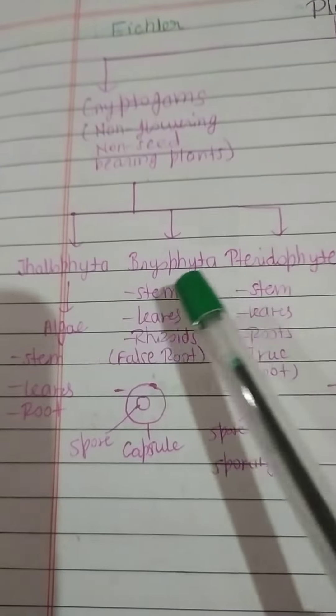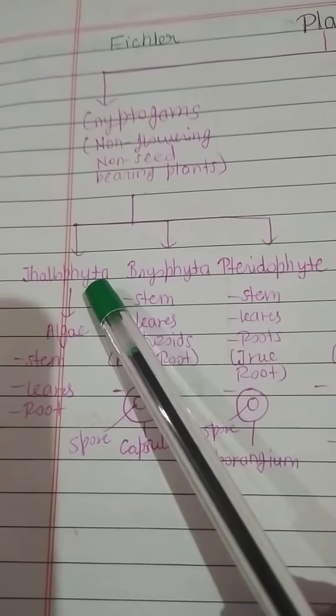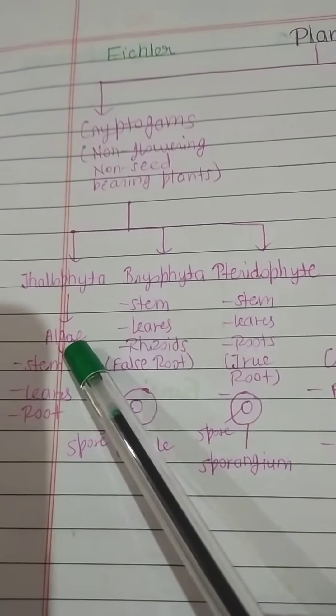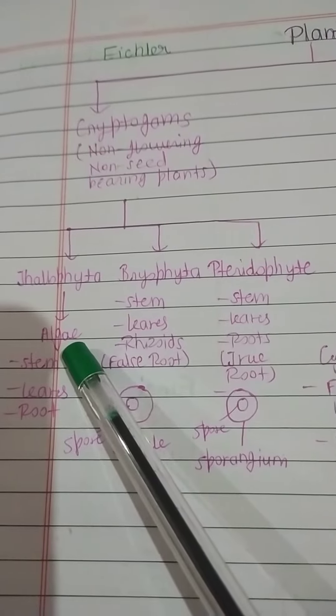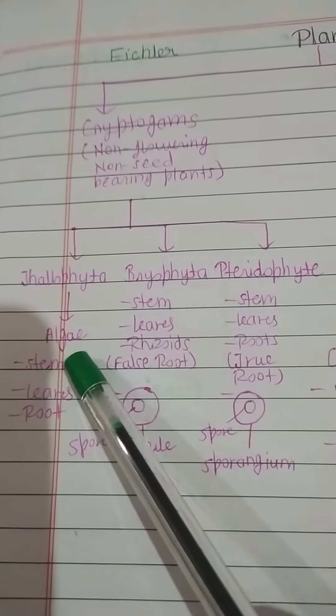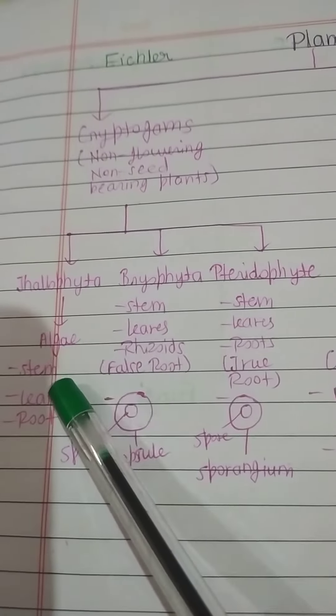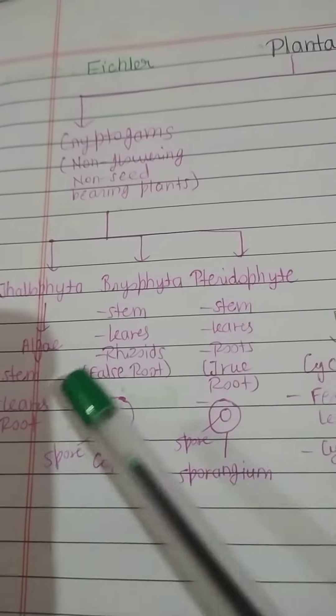In Thallophyta, that is algae, the algae body is divided into stem, leaves, and root.